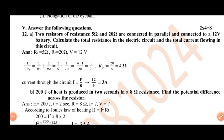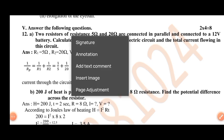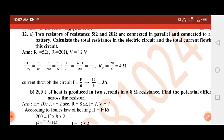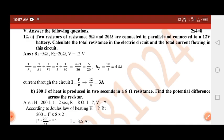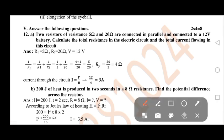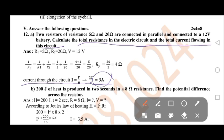In answer the following questions: two resistors of resistance. We can see the total resistance in the electric circuit and the total current flowing in this circuit. Current through the circuit: I equal to V by R, 12 by 4, which equals 3 amperes.